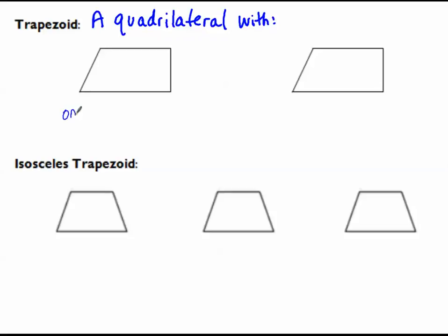One pair of parallel sides. So in this picture, it's going to be this side and this side that we would mark as parallel. But that's it — the other sides are not parallel. Because if the other sides were parallel, what would it be? That's right, a parallelogram.